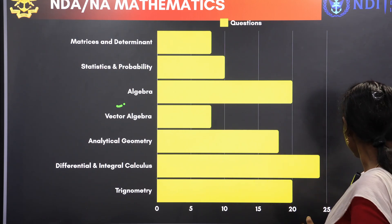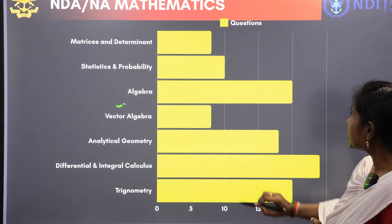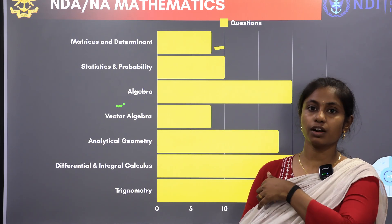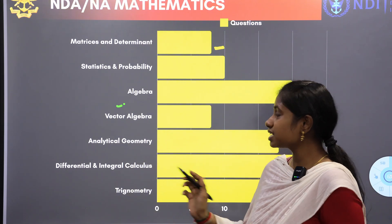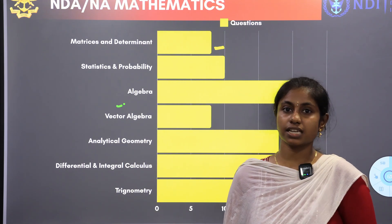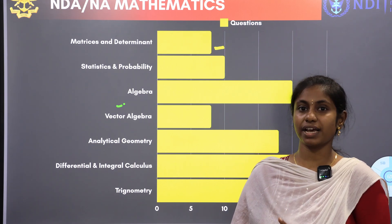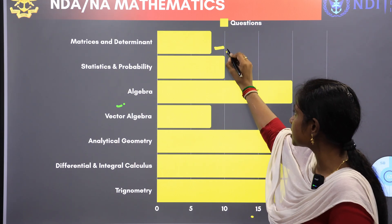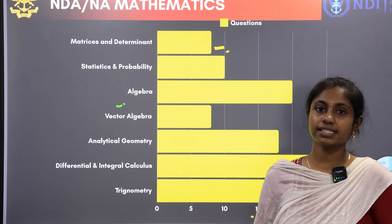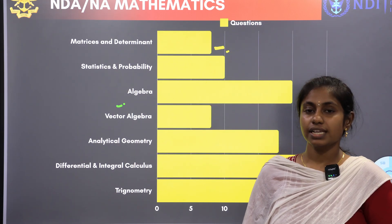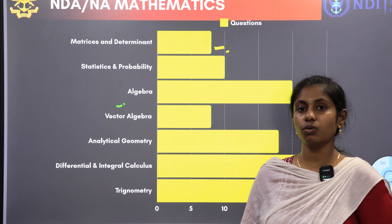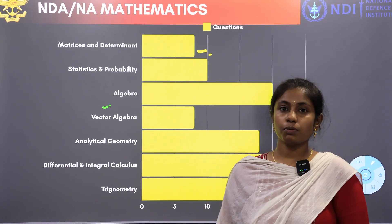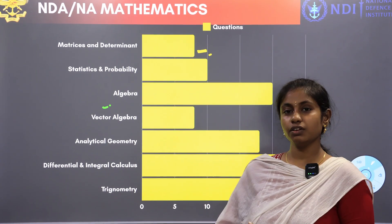In terms of weightage, matrices and determinants is a very easy chapter and everyone should choose it — both mathematical and non-mathematical background students. If you prepare the matrices and determinants chapter, that is very helpful. The next one is statistics and probability, which is also easy and will help you reach the cut-off.